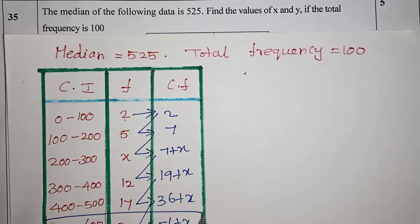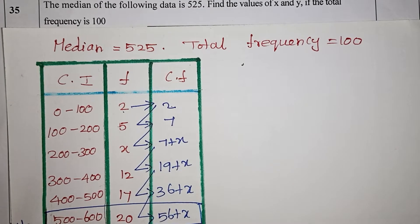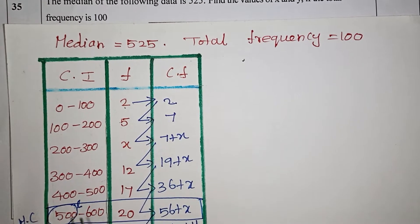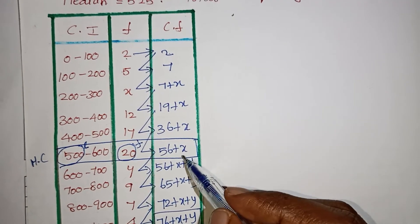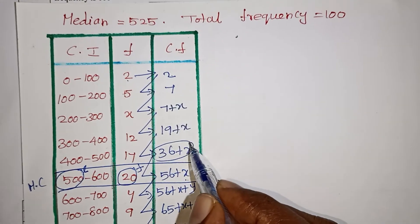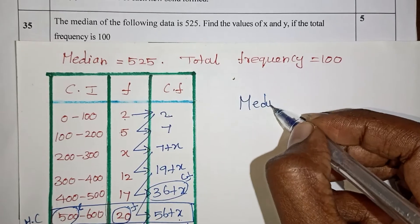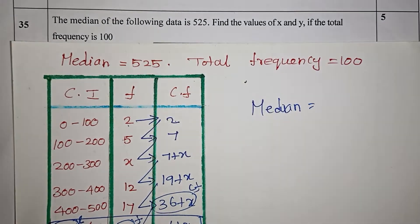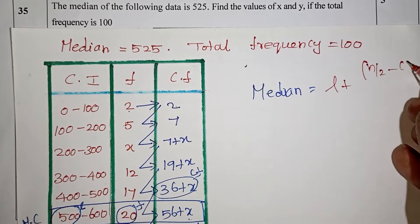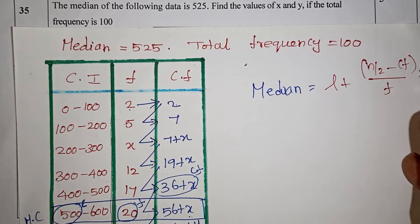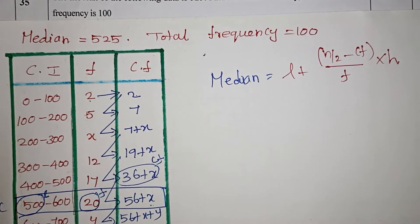The median class is determined by finding the class that contains the center value. The preceding cumulative frequency, cf, is noted. Now applying the basic median formula: Median equals L plus n by 2 minus cf, divided by f, multiplied by h.